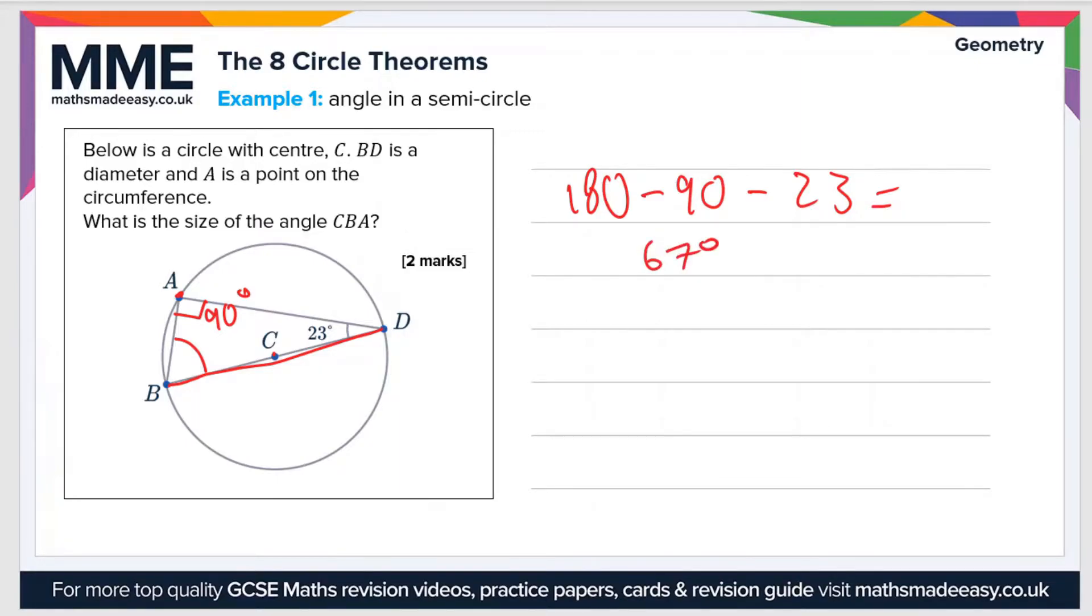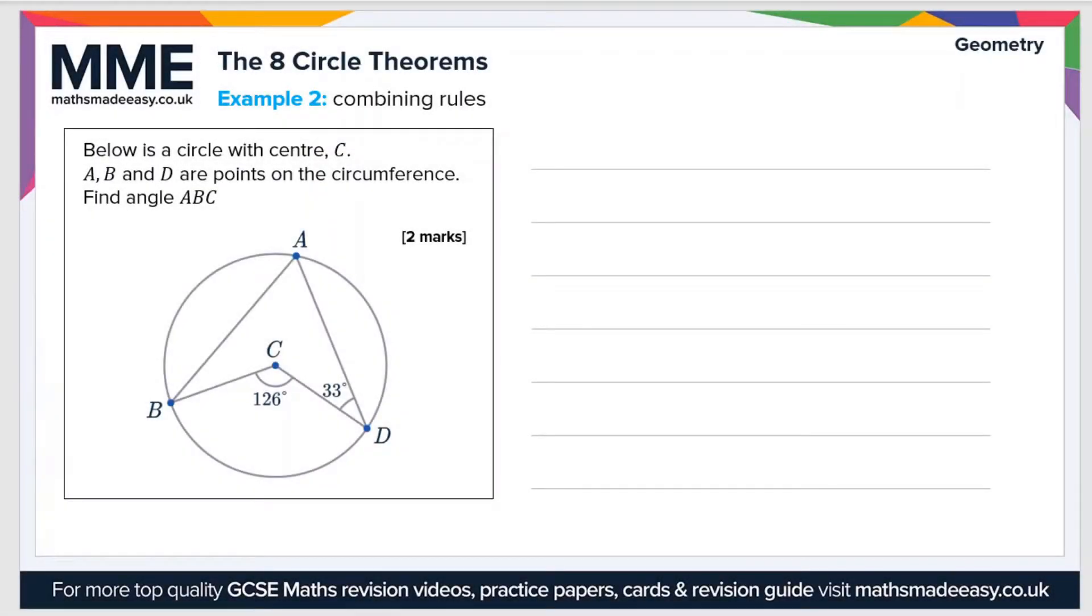So 180 minus 90 minus 23 will give us the value of angle CBA, and that is equal to 67 degrees.